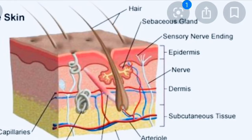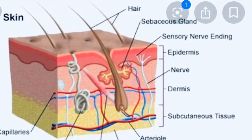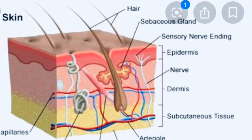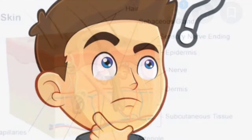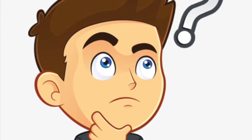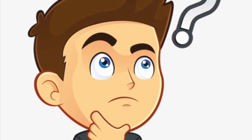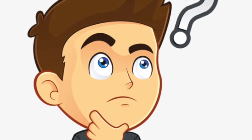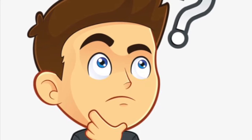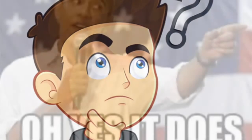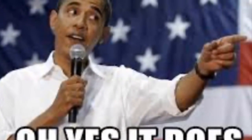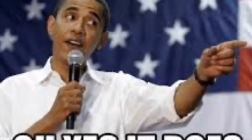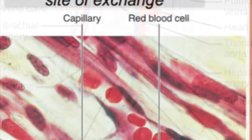The subcutaneous tissue helps connect the skin to underlying tissues such as the muscle. You may be wondering if this system also works with other systems in your body — well it does. The integumentary system works closely with the circulatory system and the surface capillaries.